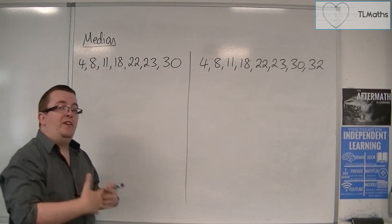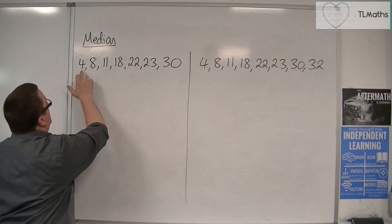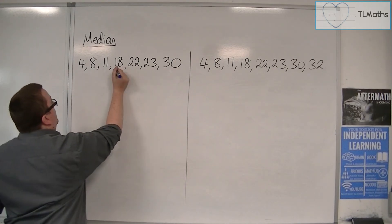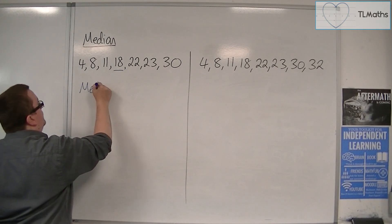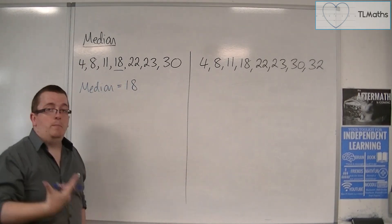So the four represents the fourth number in the list. So 1, 2, 3, 4, and so this is the median. So the median is 18, the fourth number in the list.